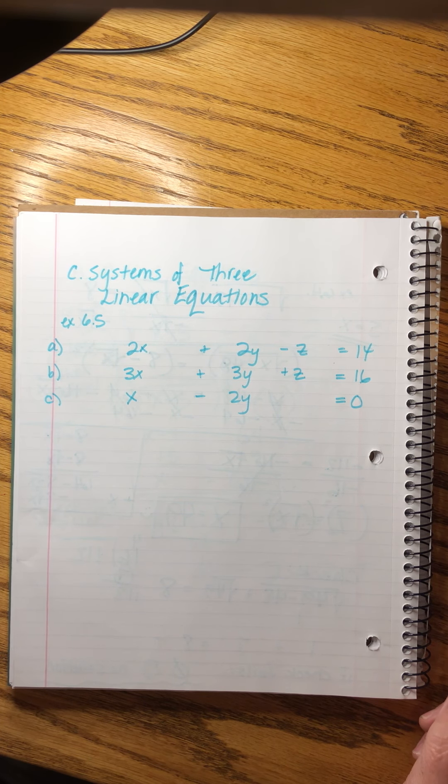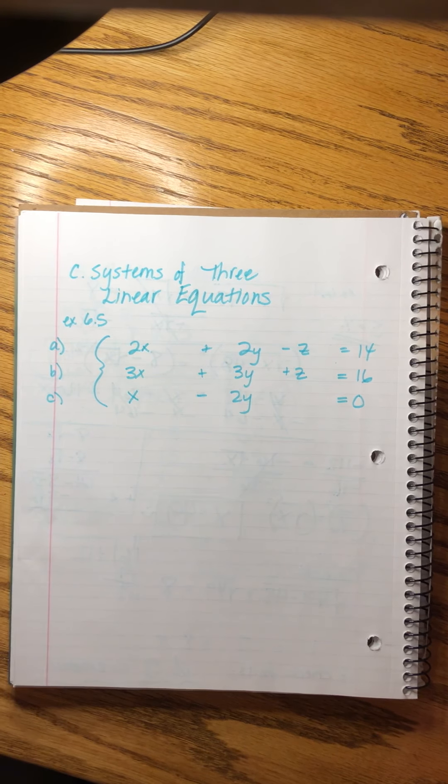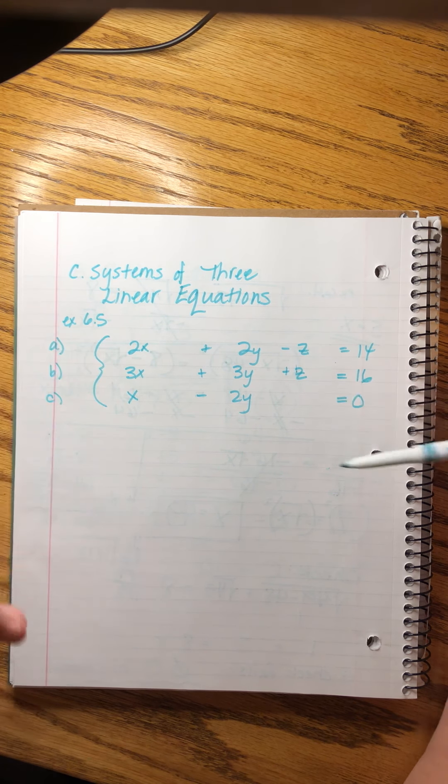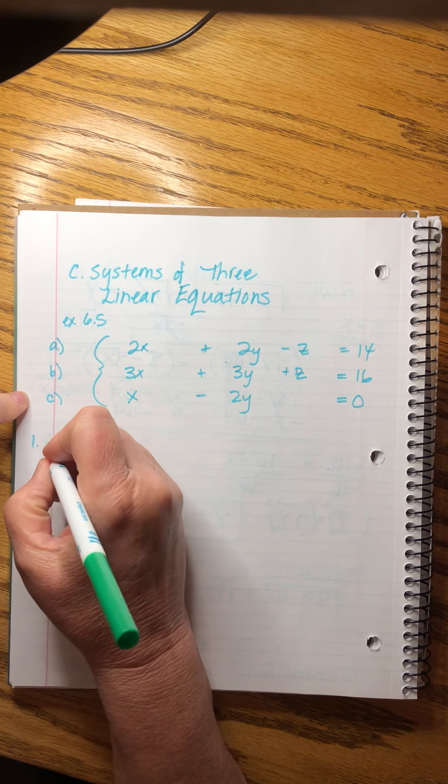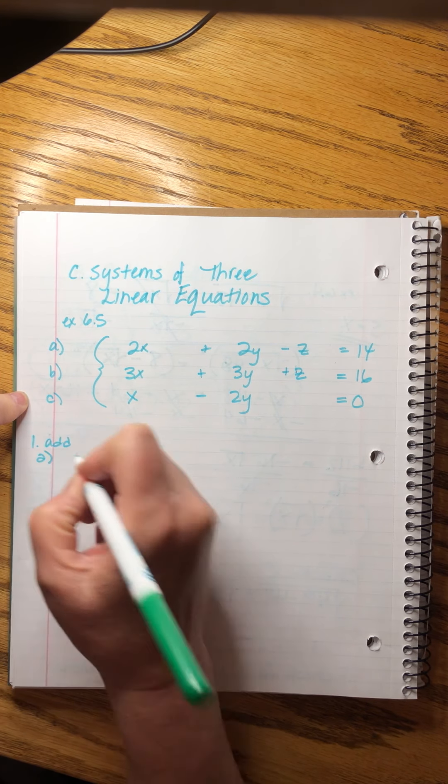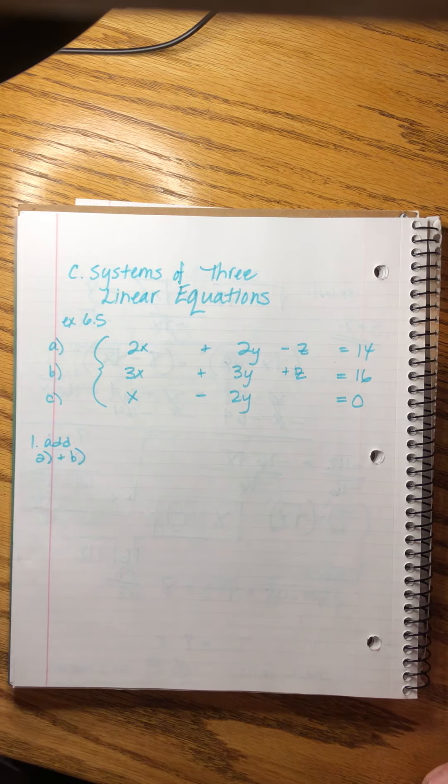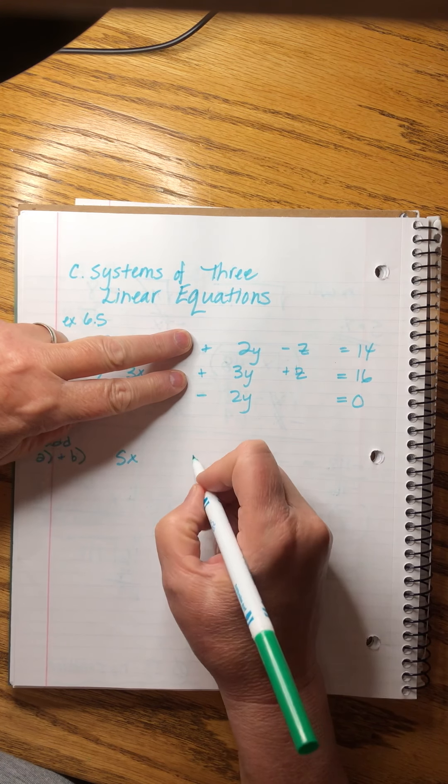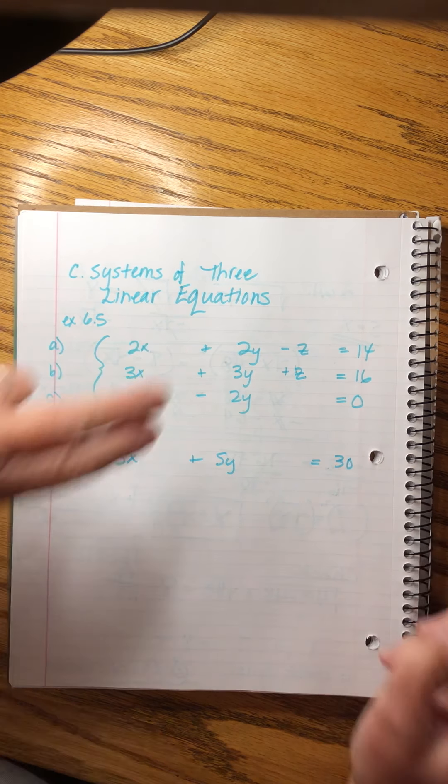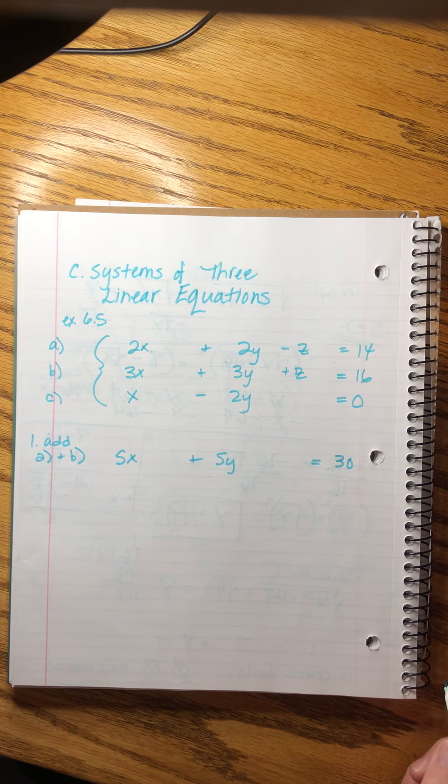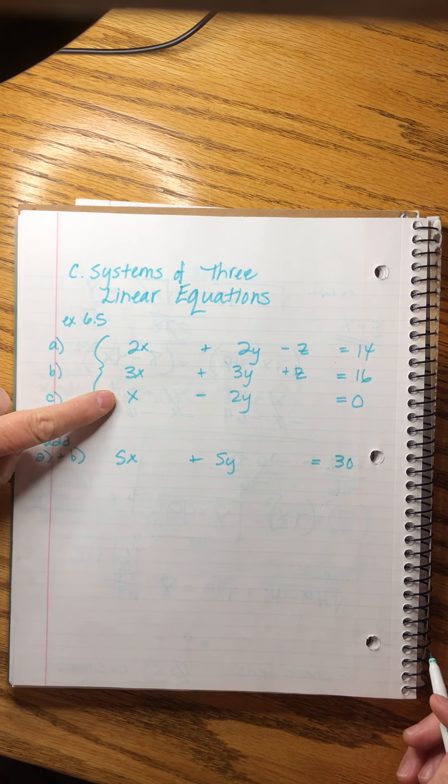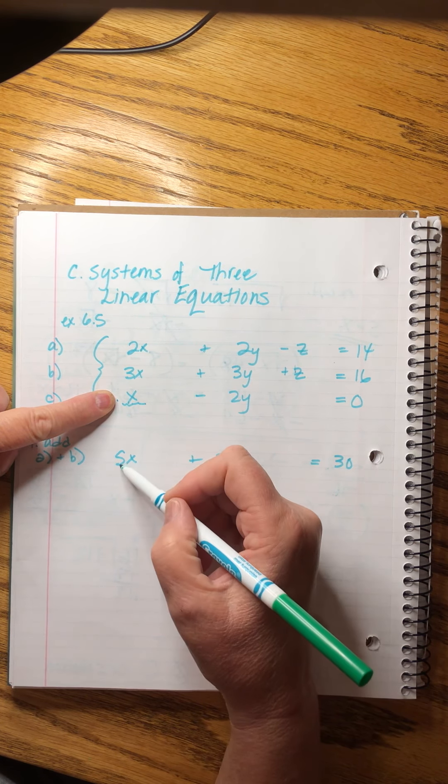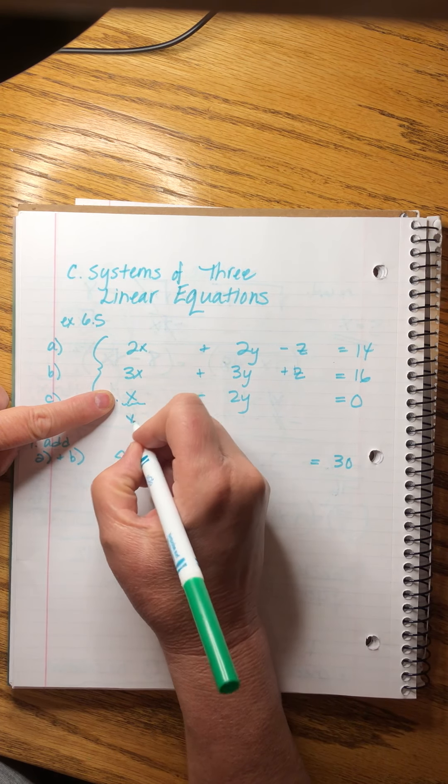So, I need to come up with a strategy to blend these all into each other. And what I see, I like this right here. Because I can see that those z's are going to cancel without any effort at all. So, my first step is going to be to add equation a plus equation b. And I'm not even going to write it over. I'm just going to add them in my head. So, I'm going to get 5x plus 5y equals 30. The z's cancel.